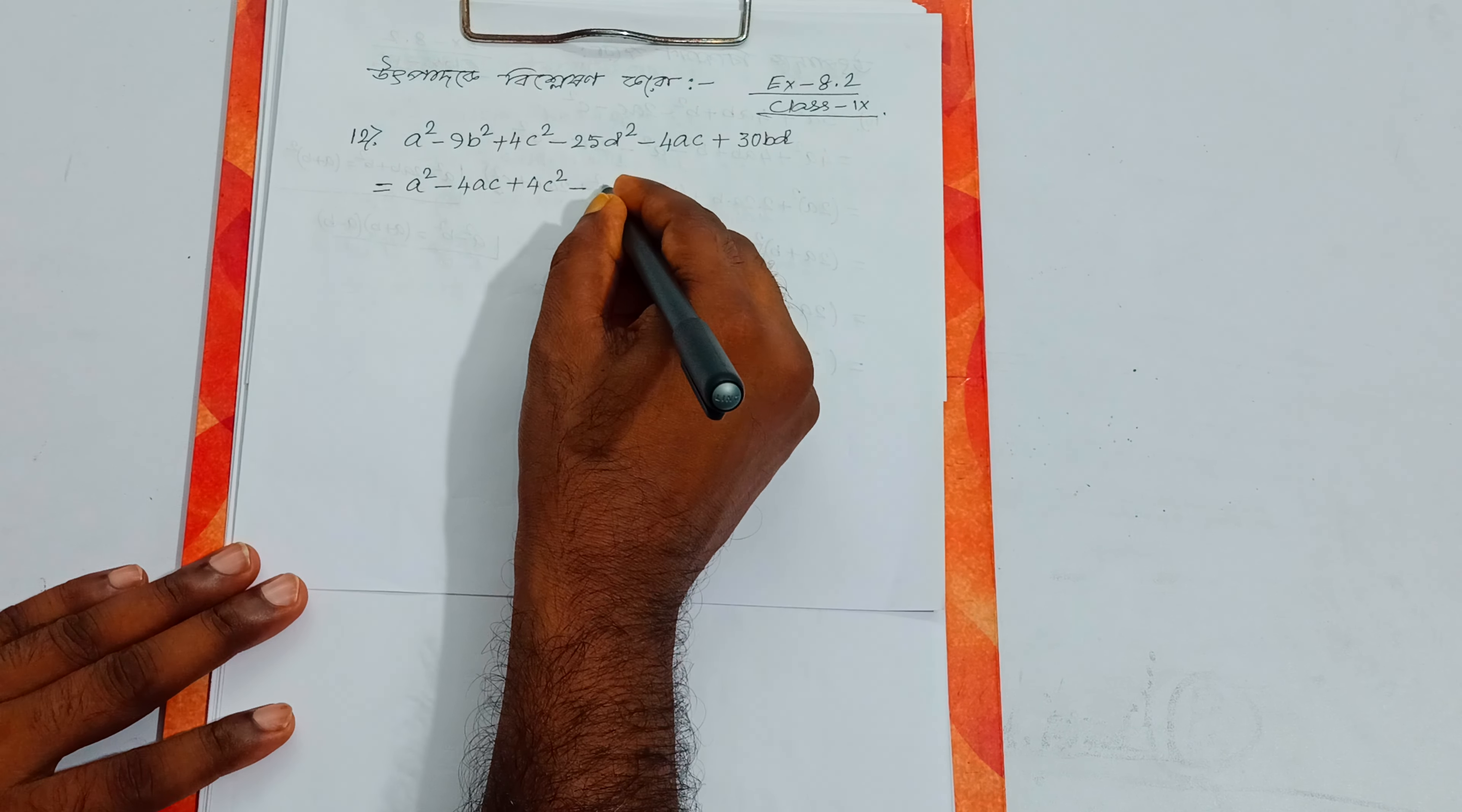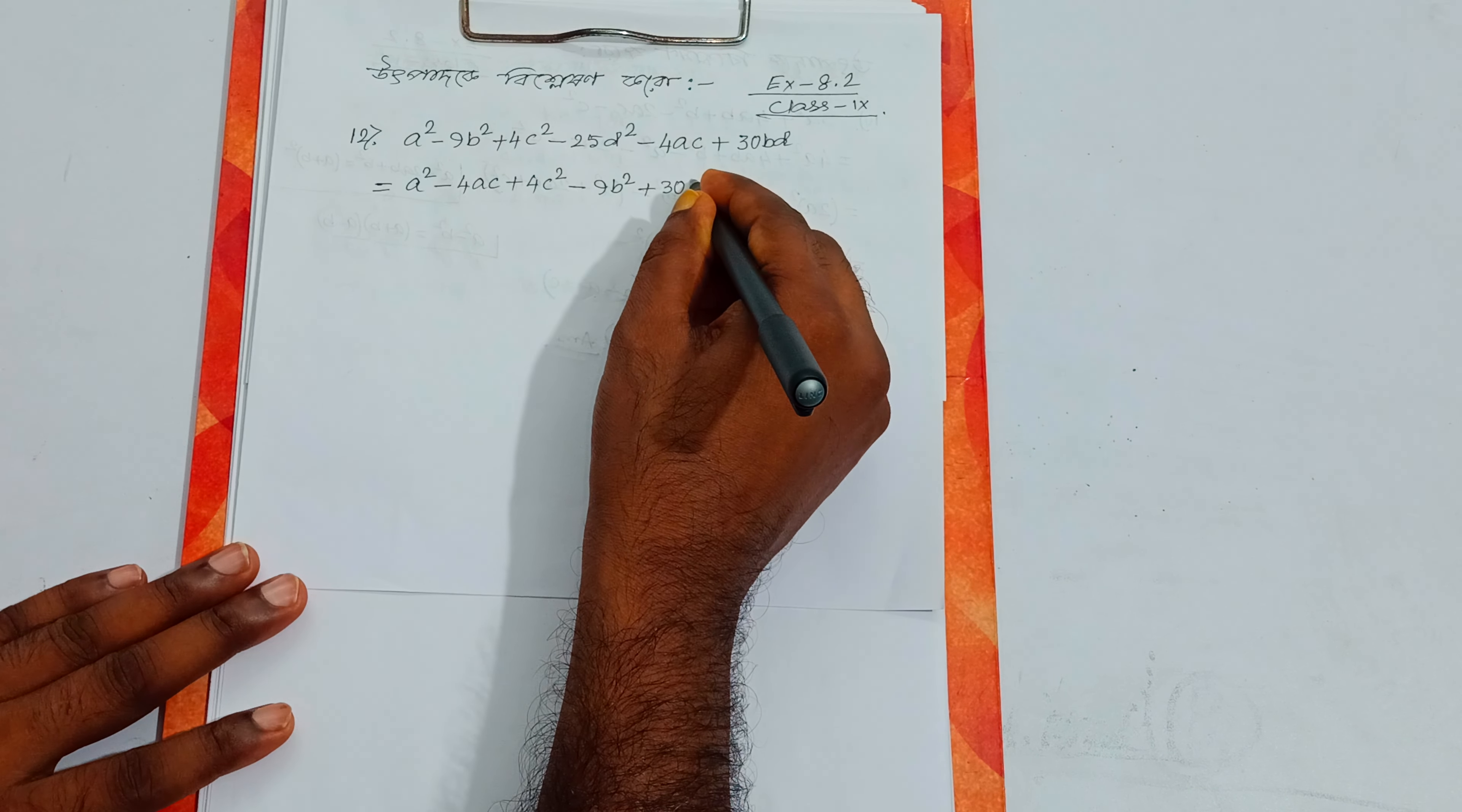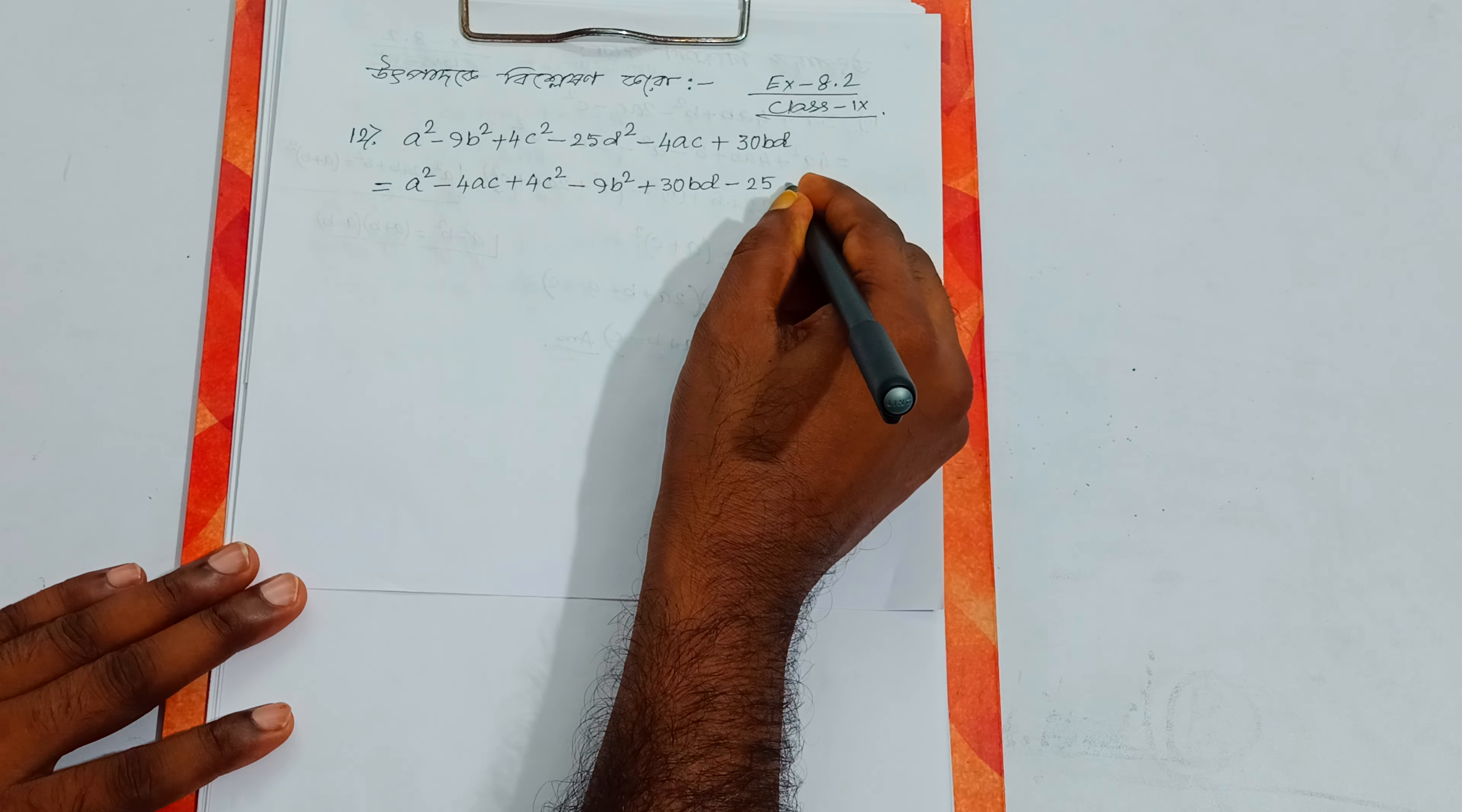We can rewrite the expression as: a² minus 9d square plus 3bd minus 25d square.